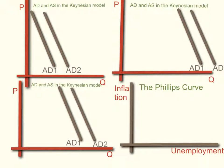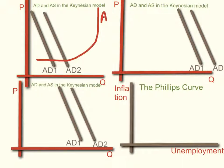Now the aggregate supply curve is not just an upward sloping curve in the Keynesian model. It's actually horizontal at first, and then at higher GDP levels, or at higher quantity levels, it becomes upward sloping, and then it starts to become vertical. So at least this is true in the short run. Just like the production possibilities curve, there's a limit to the amount you can produce within a short period of time. This is the aggregate supply curve according to Keynes.